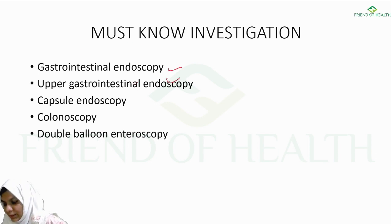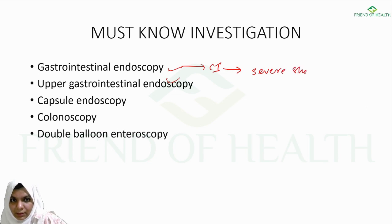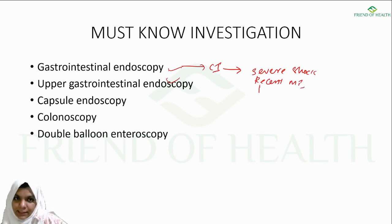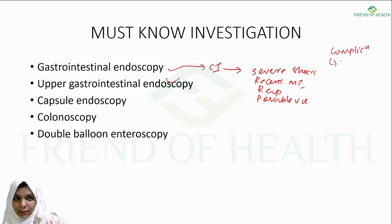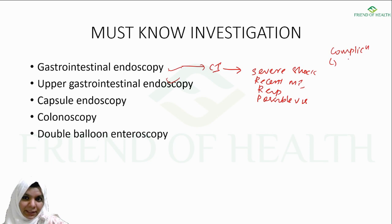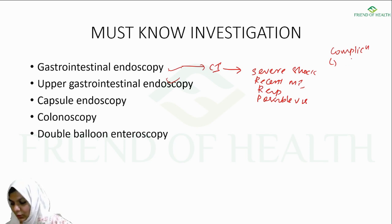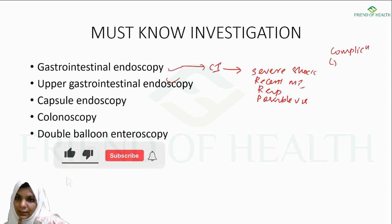Upper GI endoscopy is contraindicated in cases of severe shock, recent MI, severe respiratory disease, and possible visceral perforation. Complications include cardiorespiratory depression — since patients may be given sedation — as well as aspiration pneumonia and perforation.